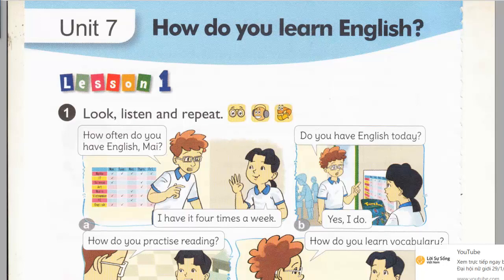Page 46. Unit 7: How do you learn English? Lesson 1. Activity 1. Look, listen, and repeat.